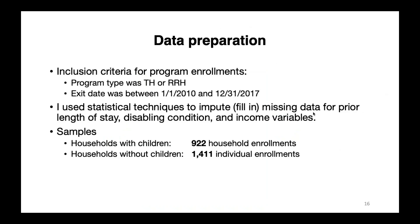For data preparation: program enrollments were transitional housing or rapid rehousing enrollments, with exit dates between 2010 and 2017. One challenge with HMIS data is missing data, but for fields that were around 20-25% missing, I used statistical techniques to fill in those missing values. I split the data into two samples: households with children and households without children — both with a high number of enrollments, giving the model a lot of statistical power. For each household type, I split enrollments into a training data set to configure the statistical model and a test data set to evaluate it. I also controlled for project-level clustering such as rural versus urban county.